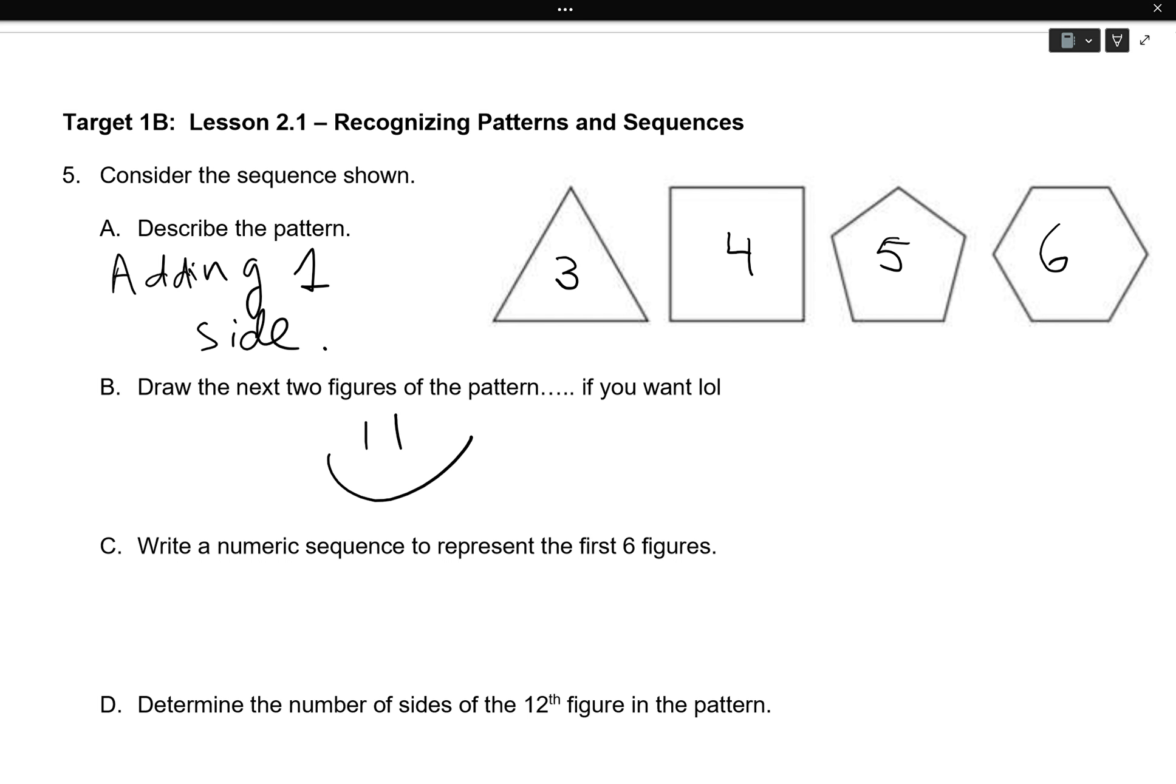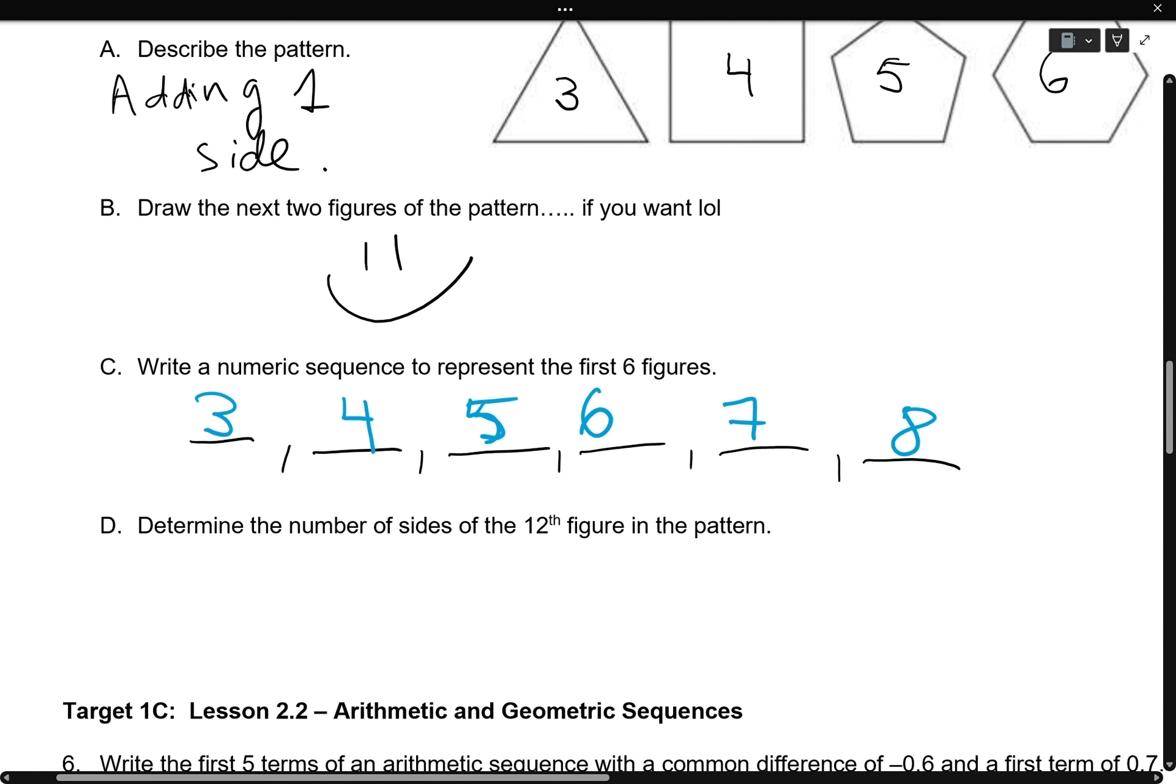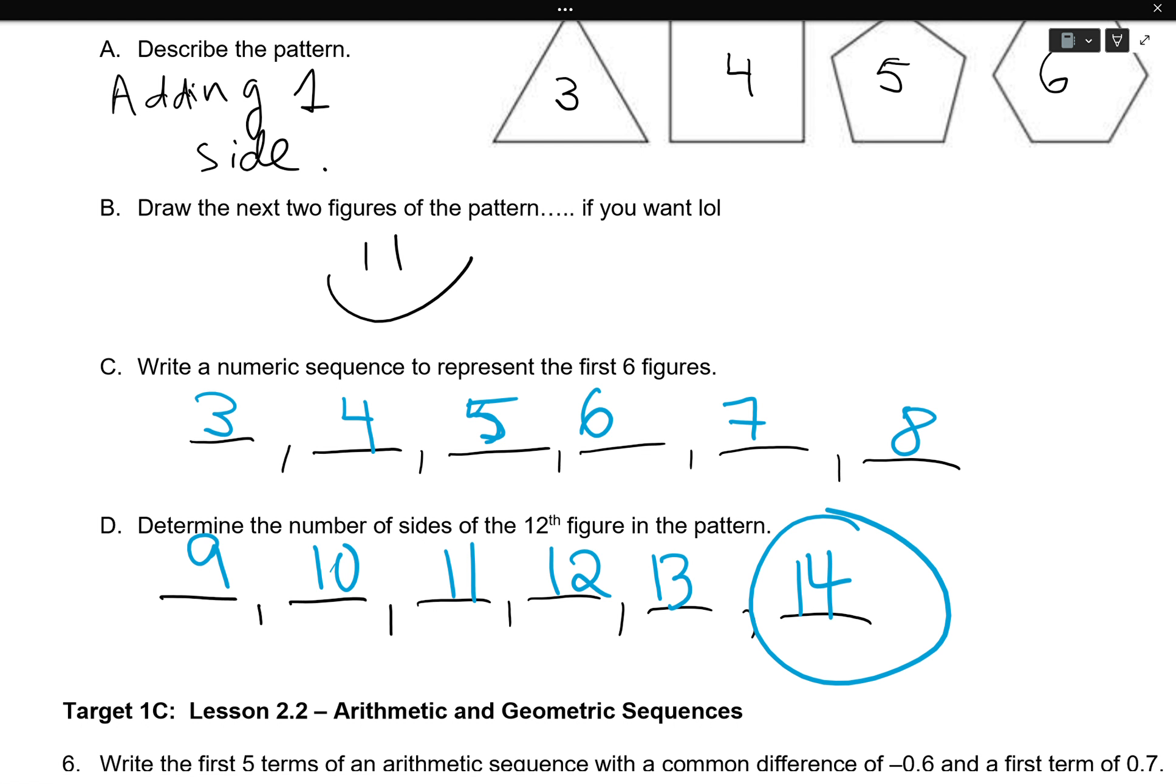Letter C. I like to write the numeric sequence for the first six figures. So that means I want six empty spots. Okay. So, my first figure is a triangle. And then I have a square, a pentagon, a hexagon. But the pattern is increasing by one. So I'm just going to keep going. Seven, eight. Determine the number of sides for the twelfth figure. Okay. Well, that means I want to continue my pattern for six more, right? Because six plus six is 12. So my seventh is nine. Ten for my eighth. Eleven for my ninth. Twelve for my tenth. Thirteen for my eleventh. And fourteen for my twelfth figure. So if we were to attempt to draw this, we would draw a figure with fourteen sides. I don't even know how to imagine that.